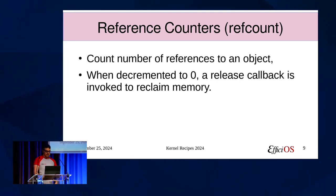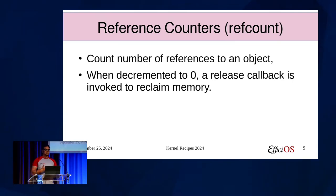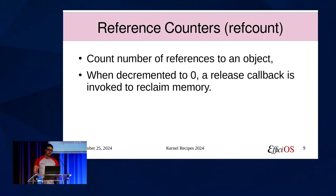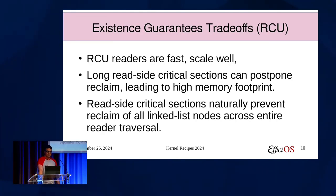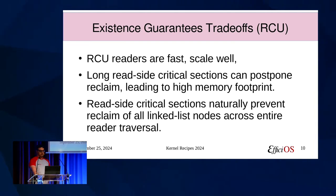Let's talk about reference counters. It counts the number of references to an object — typically initialized to 1 when you create the object. As you get additional references it increments, and when it decrements back to 0, a release callback is invoked to reclaim memory. There are many tradeoffs. For RCU, the readers are very fast and scale well. However, long read-side critical sections can postpone reclaim for a long time, which leads to high memory footprint.